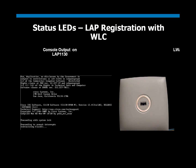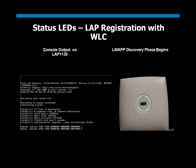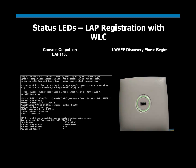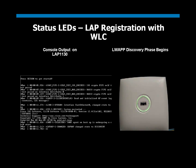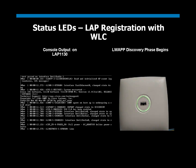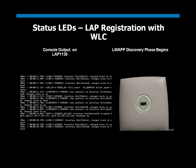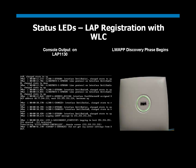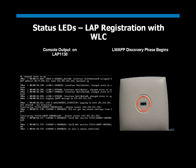Once the boot process completes, the access point enters into the LWAP discovery phase. This is where the access point applies the controller hunting algorithm to discover controllers. This phase is indicated on the status LED by an alternating dark green, amber, and red. If the access point fails to discover a controller, the status LED continues to flash these colors.